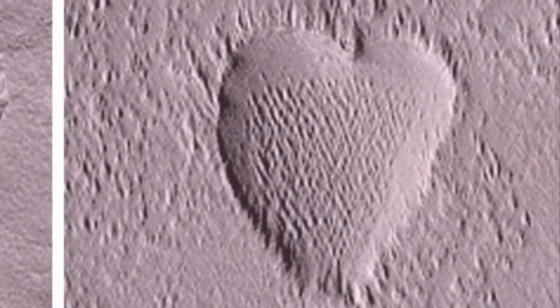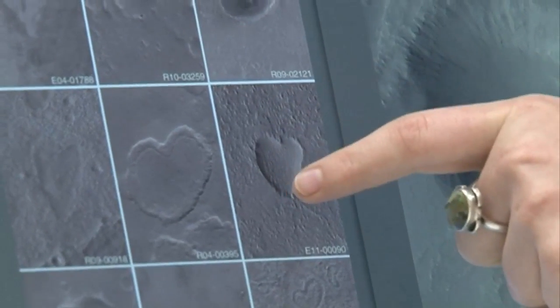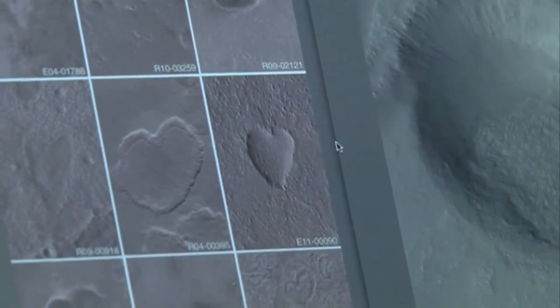In this one you can see clearly this heart structure and it's a depression in the ground. If the light's coming from the left you can see the cliff right here has a dark side and it's illuminating this side of the cliff.